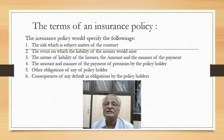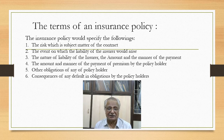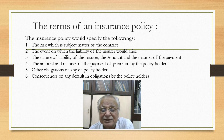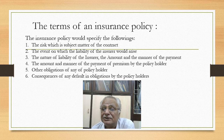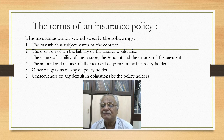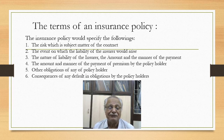The insurance policy specifies various things. First, the risk — the subject matter of the contract — must be clearly spelled out. For a motor vehicle, the registration number and ownership details must be provided. Second, the event on which the insurer's liability arises — whether partial loss, total loss, or third-party liability. Third, the nature of liability of the insurer — the amount and manner of payment — specifying the sum insured and under which terms of contract the policy was issued.